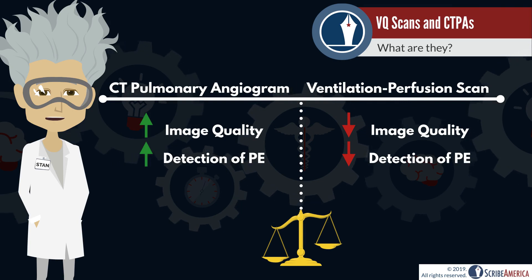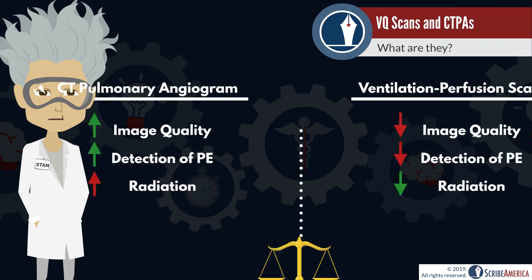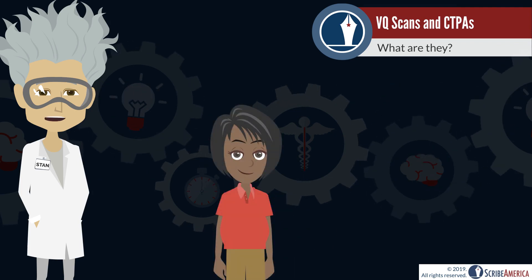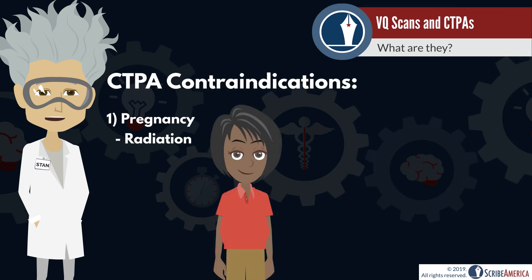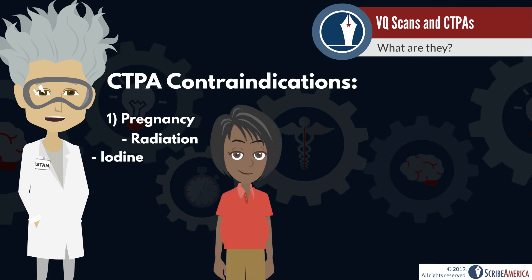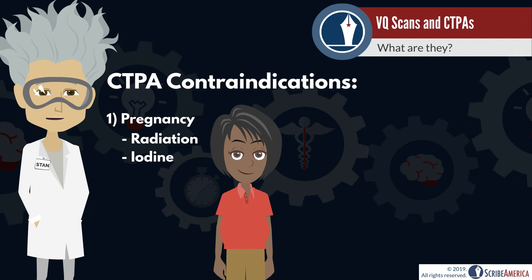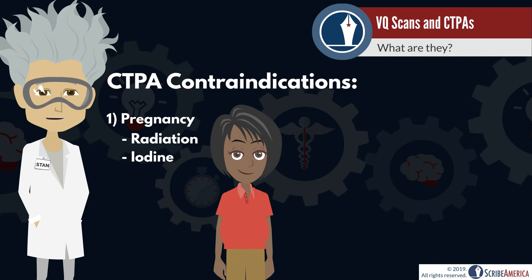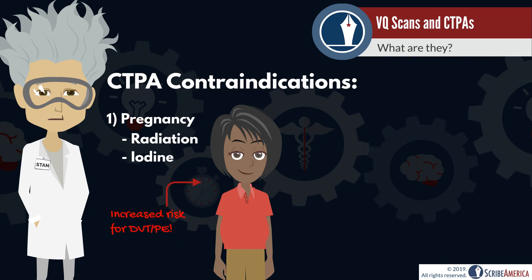VQ scans involve much less radiation exposure than a CTPA. Consider a pregnant woman suspected to have a PE — the reduced image quality is an acceptable cost for an imaging study that poses less of a risk to the fetus. This scenario is actually very realistic, as pregnant women are at an increased risk for blood clots.